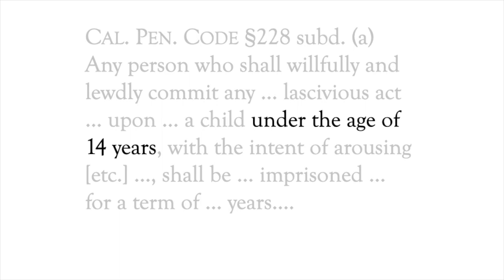There is no doubt that the victim was under the age of fourteen at the time of the offense charged. The defendant, however, says he believed the victim was much older, and his counsel says, in effect, that it was error for the trial court not to charge the jury to acquit unless it found beyond a reasonable doubt that the defendant did not believe his victim was yet fourteen. What culpability, if any, must the prosecution show as to this attendant circumstance?